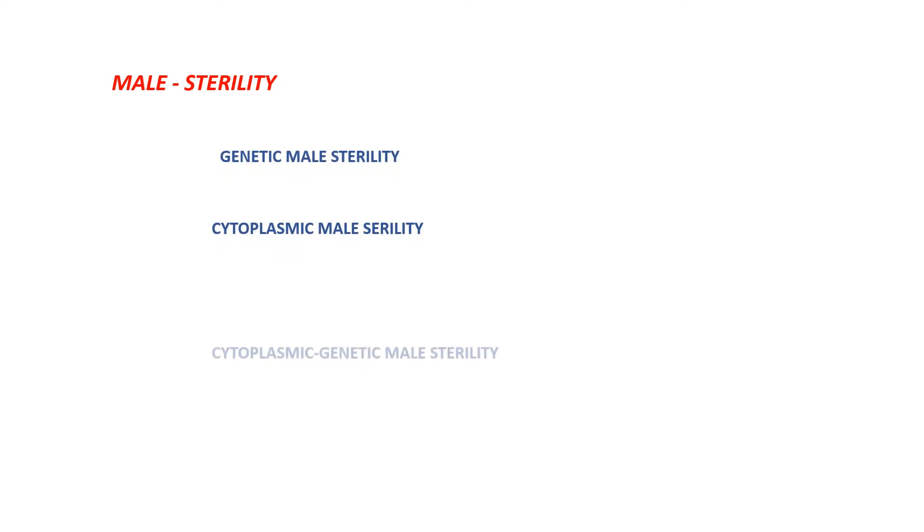The next mechanism is male sterility. It is a condition which arises due to the absence of functional pollen; that is, these flowers do not produce functional pollen. It is of three types: genetic male sterility, cytoplasmic male sterility, and cytoplasmic genetic male sterility.